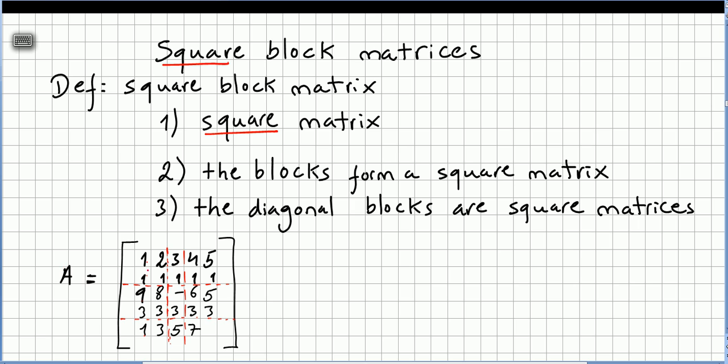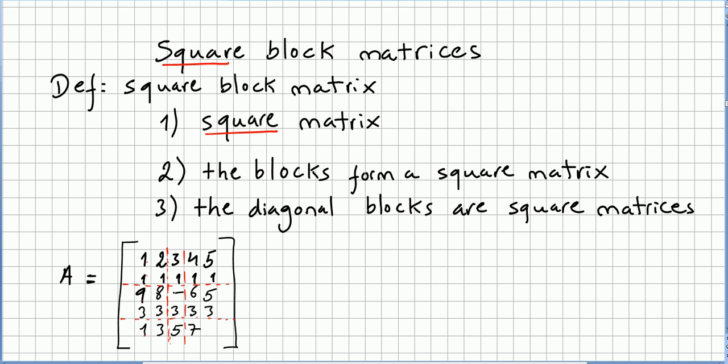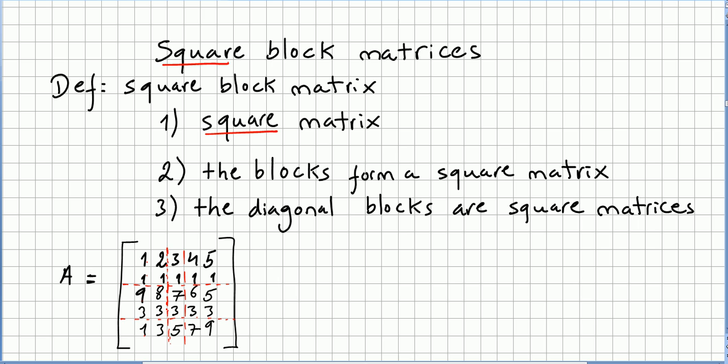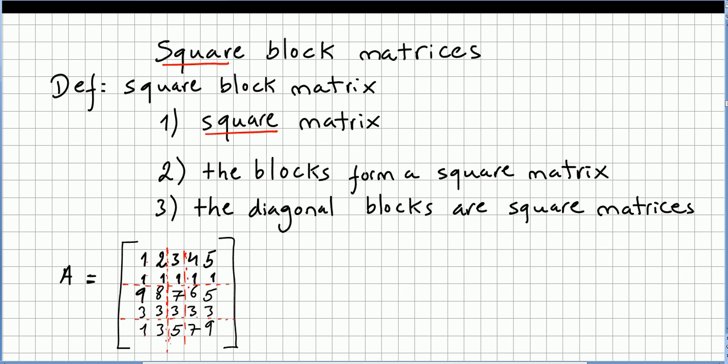Okay, I'm going to pick a matrix here. 1, 2, 3, 4, 5. 1, 1, 1, 1, 1. 9, 8, this should be 7, right? Let me change this. Yes, 9, 8, 7, 6, 5. All 3 is on the fourth row. And 1, 3, 5, 7. I need another element here, 9. Now I'm going to divide this matrix in blocks. So I'm going to put some, a division here, another one here. This is the usual way we do this blocks.